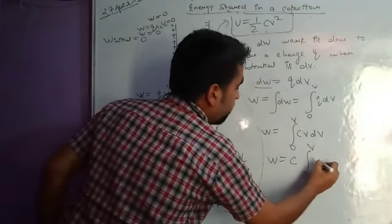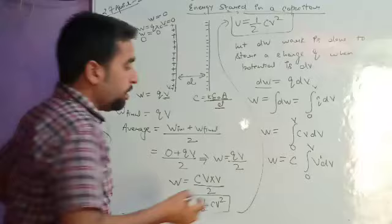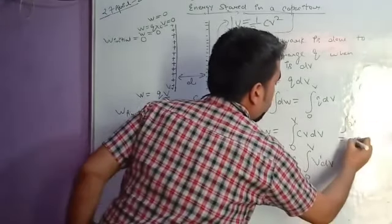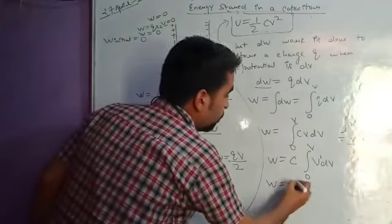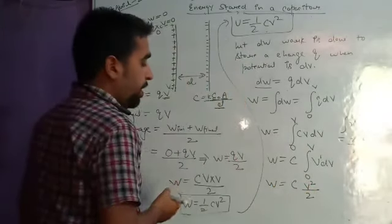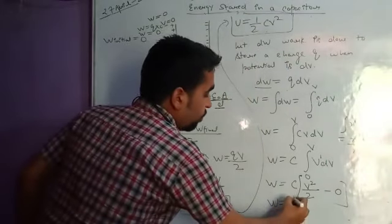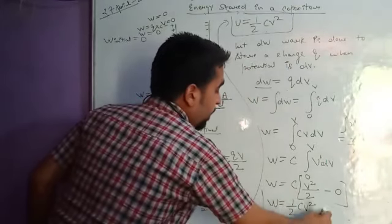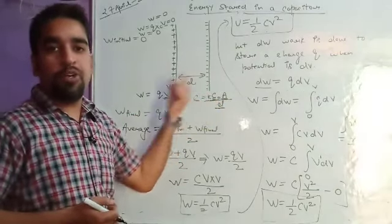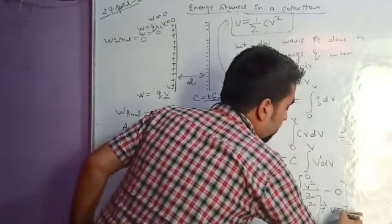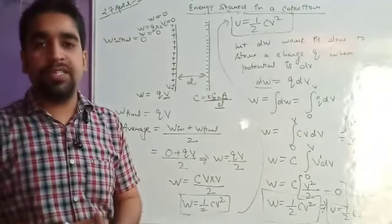So C comes outside the integral: W = C times integral from 0 to V of V dV. Using the power rule, the integral of V (that is x^n with n=1) is V squared divided by 2. Substituting the limits, W = C times V squared divided by 2, which gives W = half CV squared. This work done to accumulate all the charges is stored as potential energy, so U = half CV squared. This is the energy stored inside a capacitor.